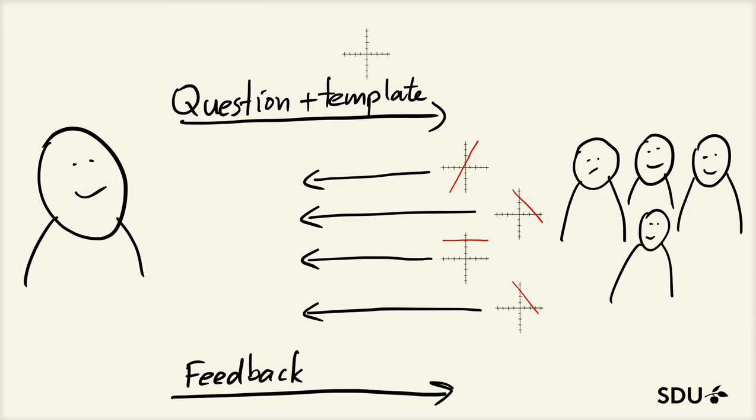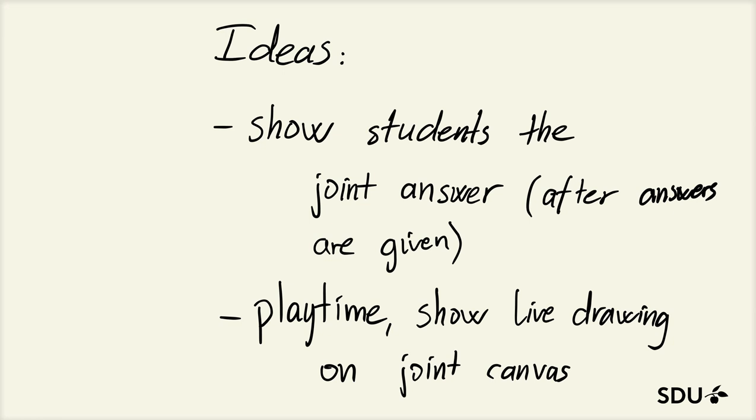So the system I suggest and we have implemented is to push some kind of template to the students along with a question, and then see how all the students are answering this question by drawing these lines. Finally, we can summarize it somehow by stacking all these images on top of each other, which gives the teacher a quite good idea about what the class thinks about something and can adjust the teaching based on that. One of the things we tried in class was to show the students the joint answer after the entire class had answered a question. Then they could see, did I answer the same as the rest of the class, was that correct, and how much off from the class. That gave some quite nice moments in the class.